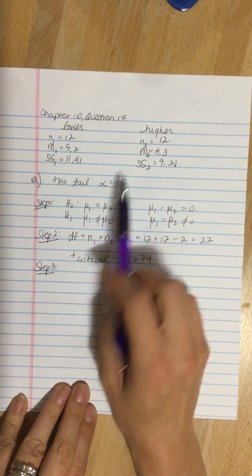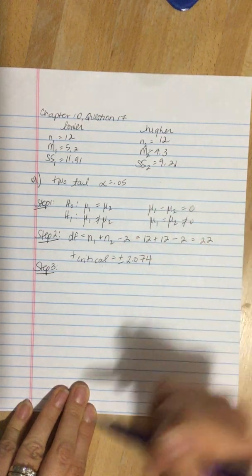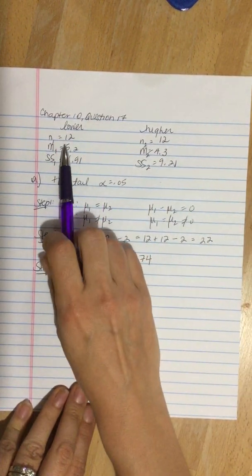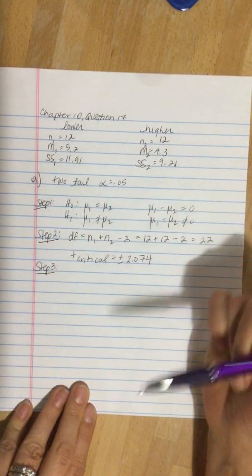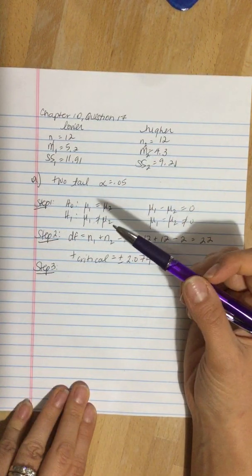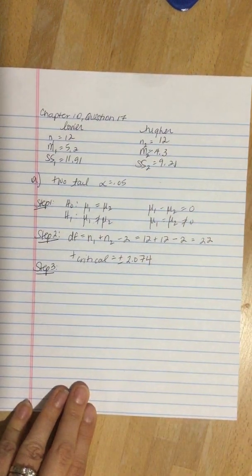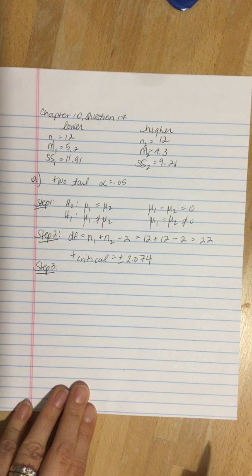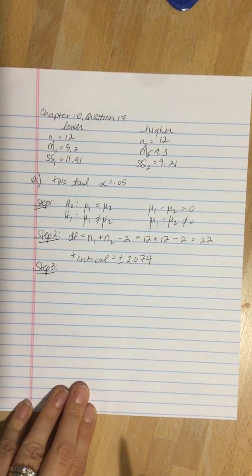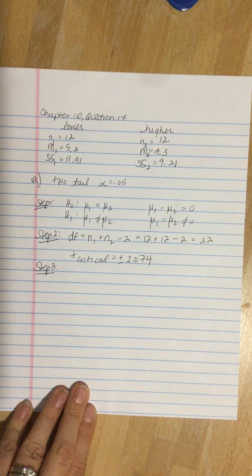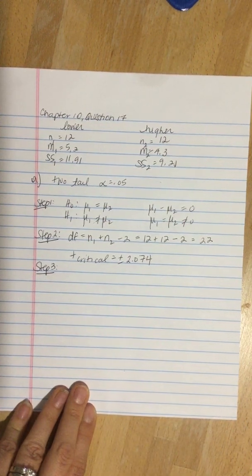We could calculate the variance and plug those directly into the estimated standard error formula because we have equal n's. So in my previous example I went with calculating the pooled variance. This time, just to change it up, I'm going to do it a little bit different. Whichever works for you. If the populations aren't of the same size, then you absolutely have to calculate the pooled variance first.